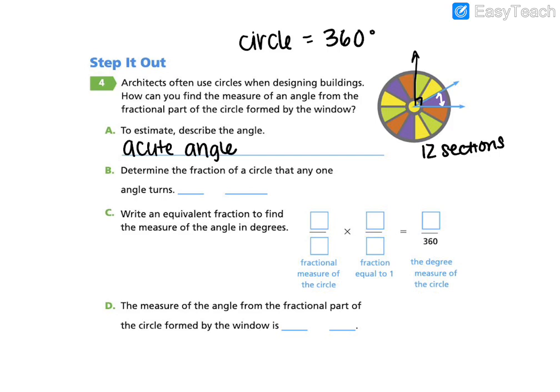We need to determine the fraction of a circle that any one angle turns. So what is our unit fraction here? Our unit angle, it is 1/12th of the circle. Because we know our circle is broken into 12 sections for the window.